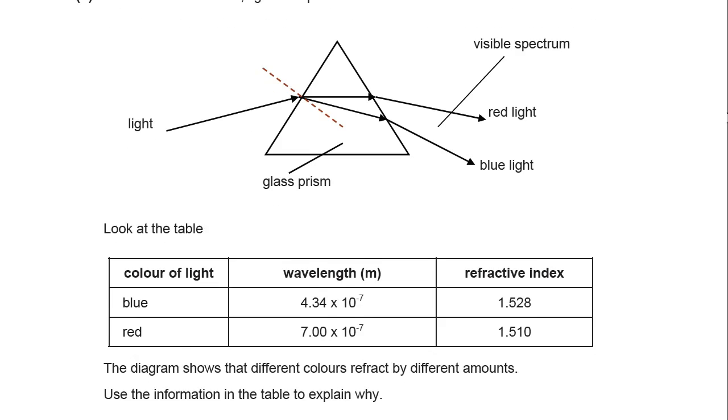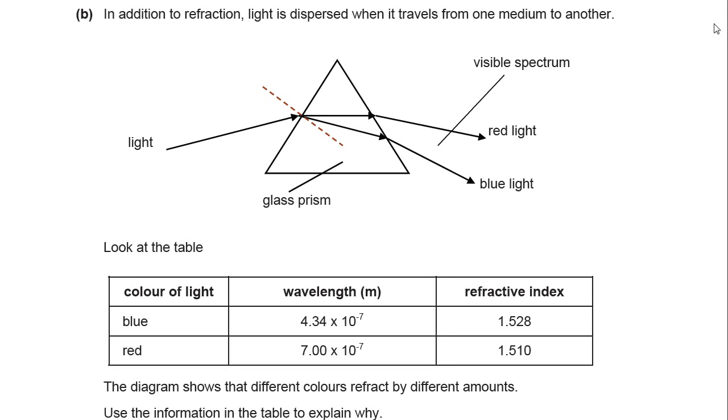So here we have the situation of dispersion of light into the visible spectrum, into the rainbow. You probably have done this experiment in class at some point. You take white light and it splits into the visible spectrum, the red, orange, yellow, green, blue, indigo, violet visible spectrum. In addition to refraction, light is dispersed when it travels from one medium to another. Here's that word I used, dispersed.